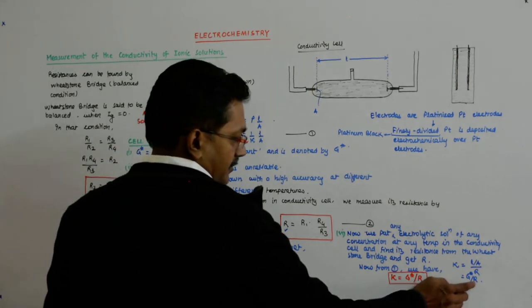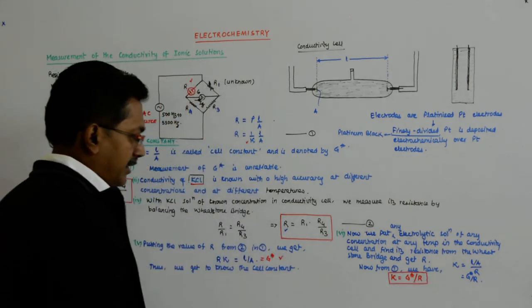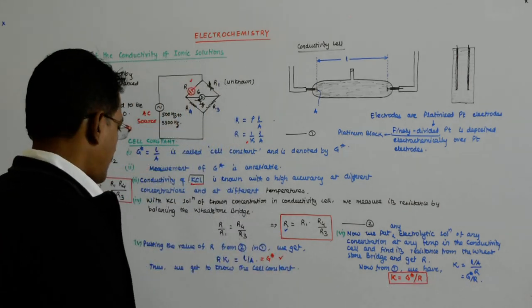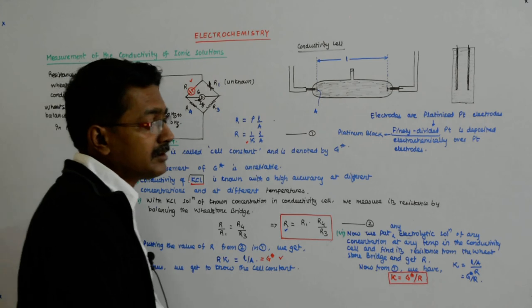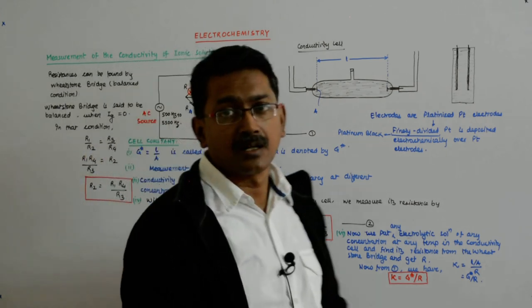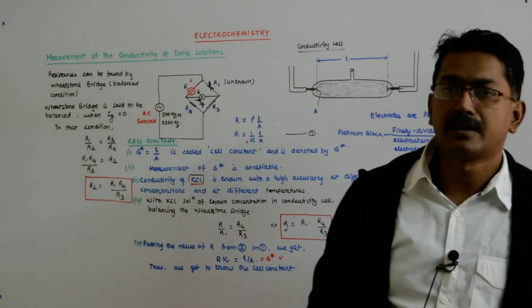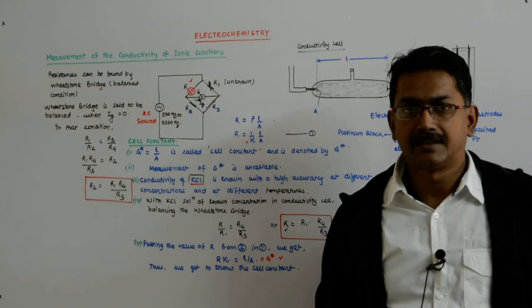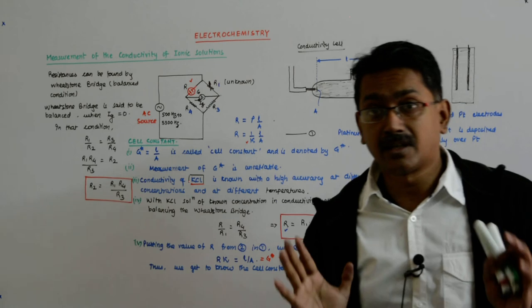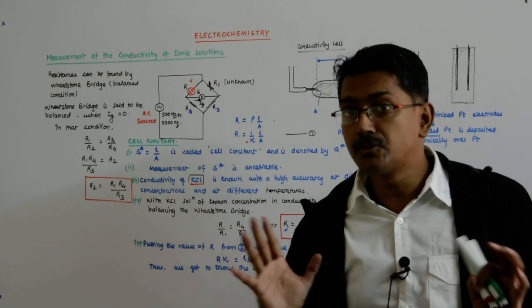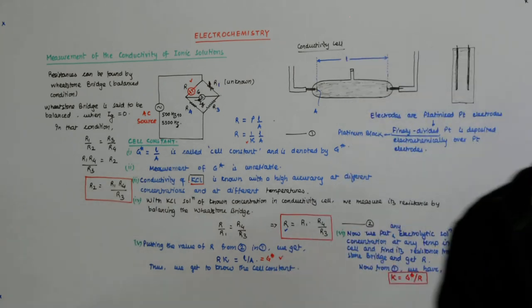This is what we have done here — G star upon R gives us the kappa, that is the conductivity of the solution.